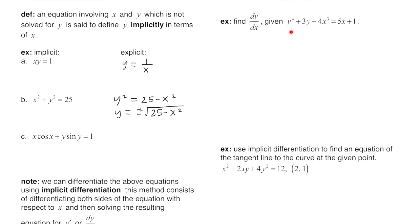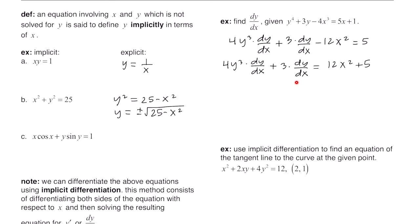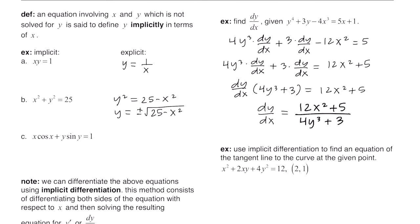This example says: find dy/dx given y to the 4th plus 3y minus 4x cubed equals 5x plus 1. Because we're taking dy/dx — the derivative with respect to x — any non-x term will generate a dy/dx. The derivative of y to the 4th is 4y cubed times dy/dx. The derivative of 3y is 3 times dy/dx. The derivative of negative 4x cubed is negative 12x squared. The derivative of 5x is 5, and the constant's derivative is 0. We put dy/dx terms on one side, factor out dy/dx, and divide. So dy/dx equals 12x squared plus 5 over 4y cubed plus 3.